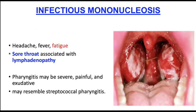The most common clinical manifestation of Epstein-Barr virus is infectious mononucleosis, characterized by headache, fever, fatigue, sore throat, and lymphadenopathy — swollen lymph nodes near the throat. There is pharyngitis that can be very painful, sometimes exudative with visible plaques. It may also resemble streptococcal pharyngitis.